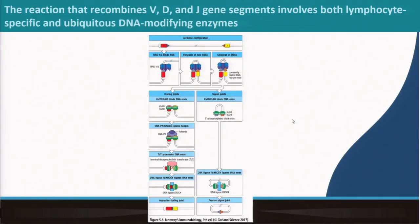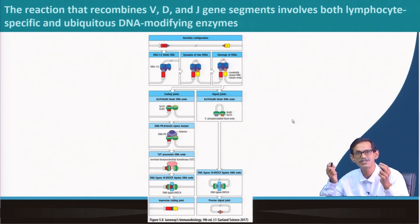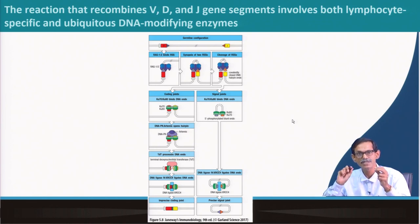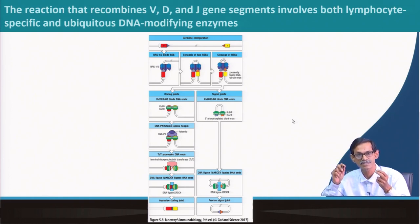Do not be scared about seeing so many colors and proteins. What it is saying is basically the reaction that recombines V, D, J different gene segments involves some very specific proteins — lymphocyte-specific proteins which are not expressed anywhere else or in any other cells.